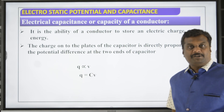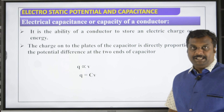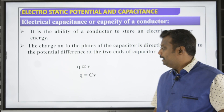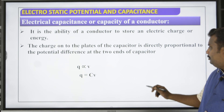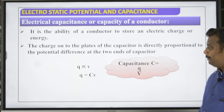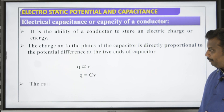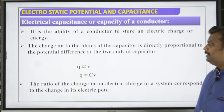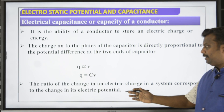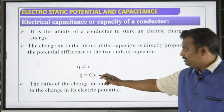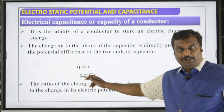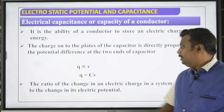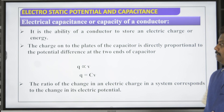Removing the proportionality and introducing a constant C, called capacitance: capacitance C is equal to Q by V. The definition is: the ratio of electric charge to voltage or electric potential is called capacitance.